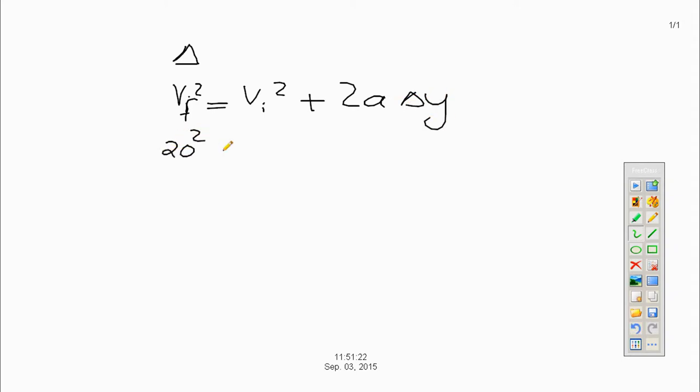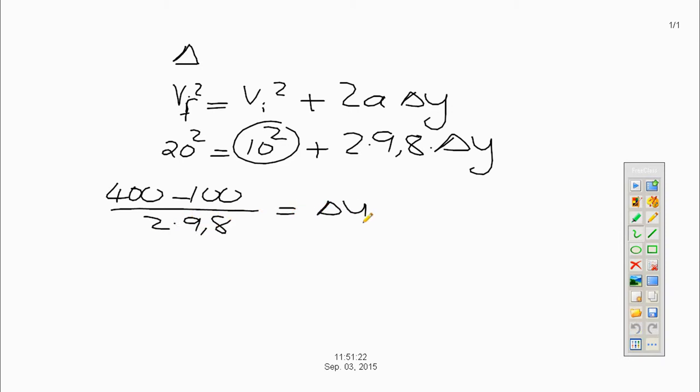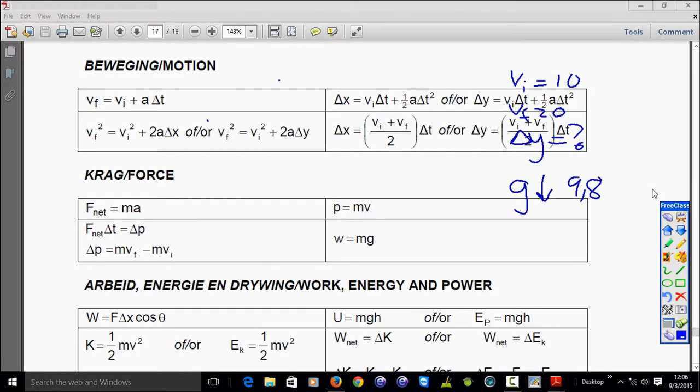Substitute, final velocity, 20. Initial velocity, 10. 2 times 9.8. Delta y is the one I'm looking for. So we'll have 400. 10 square is 100. Minus 100. Divide by the 2 times 9.8. That will give me delta y. So delta y equals 15.31 meters. And you will see it's a positive value. It just again indicates we are going downward.